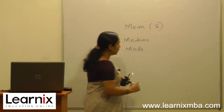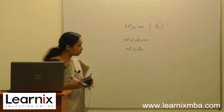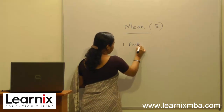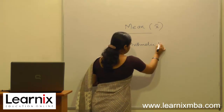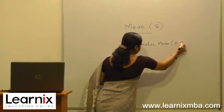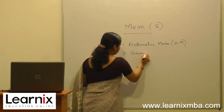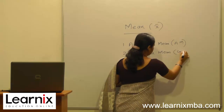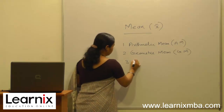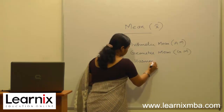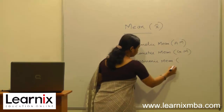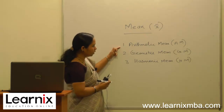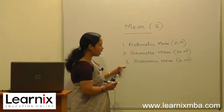Mean itself is classified into three types: arithmetic mean or AM, geometric mean or GM, and harmonic mean or HM.